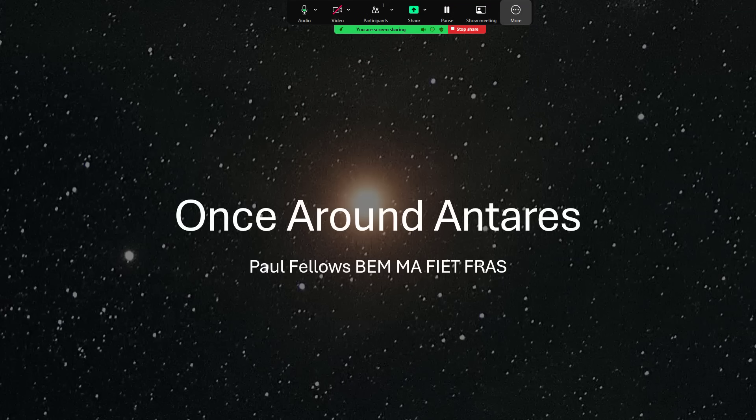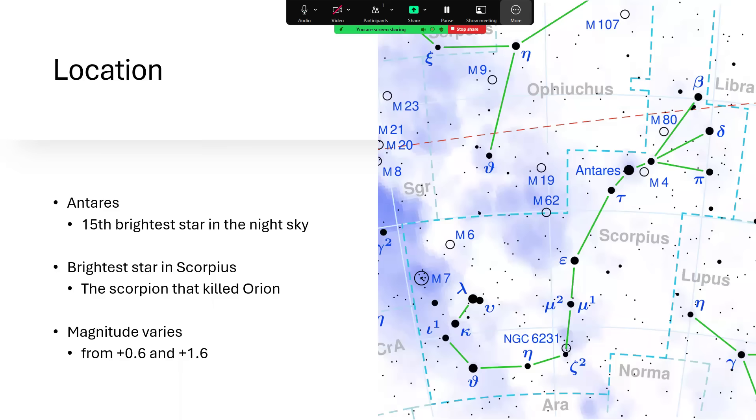Once around Antares. So Antares is the 15th brightest star in the night sky and the lead star of the constellation of Scorpius, the scorpion, the one that killed Orion.